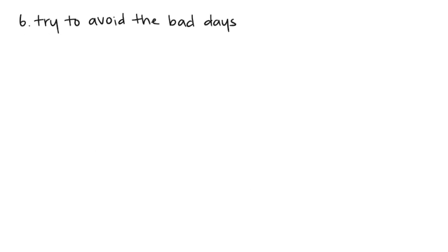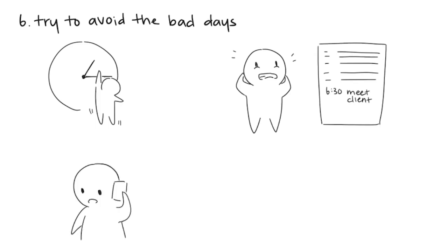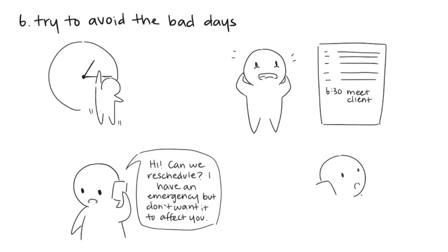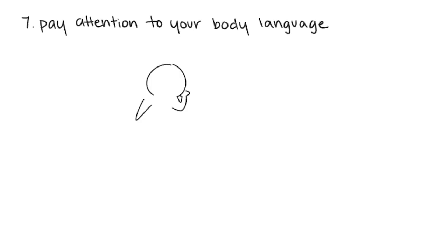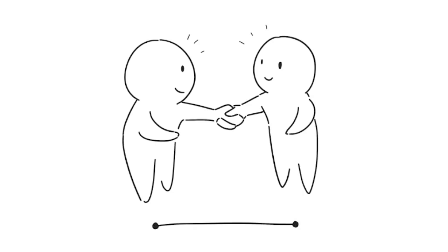Six: try to avoid bad days — timing plays an important role. If something unfortunate happens that deeply affects you, you're not obliged to follow through with a scheduled meeting that same day. Let them know your time with them is valuable, so you don't want unfavorable aspects of your life to affect them. Seven: pay attention to your body language — body language has four times the influence on first impressions than the words out of your mouth. Make sure your posture is good, make strong eye contact, and lean forward to express interest. What do you do that helps you make a good impression? Feel free to share in the comments below.